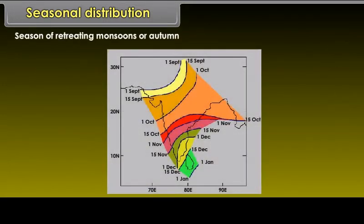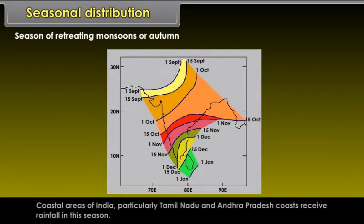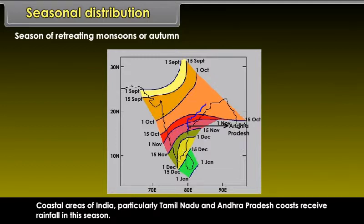During the season of retreating monsoons or autumn, winds move and turn back from the mainland to the Indian Ocean. Coastal areas of India, particularly Tamil Nadu and Andhra Pradesh coasts, receive rainfall in this season.